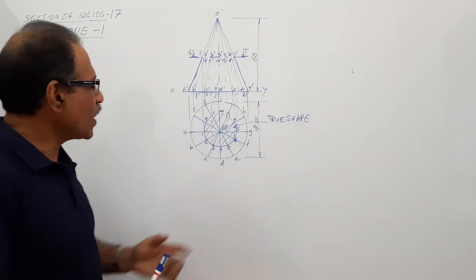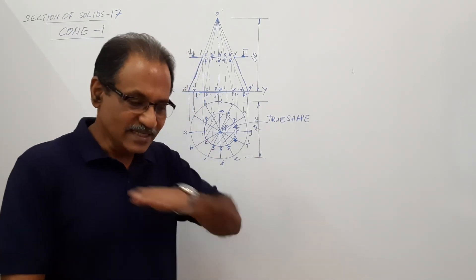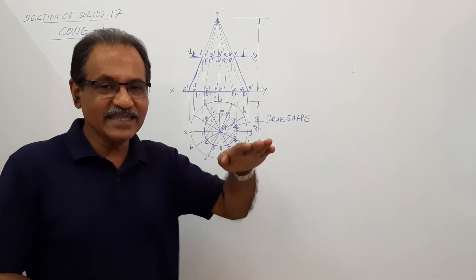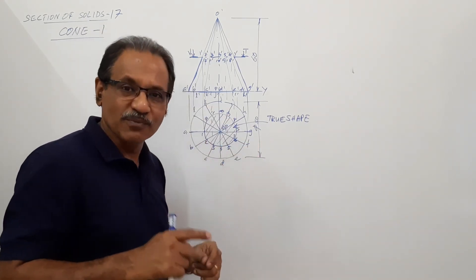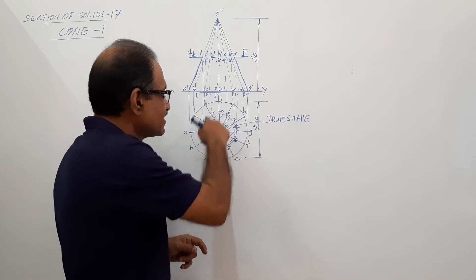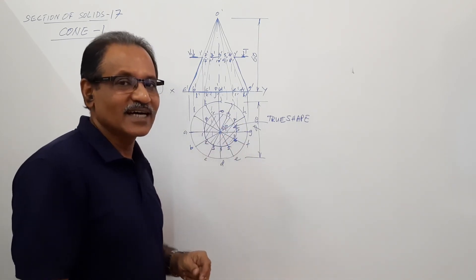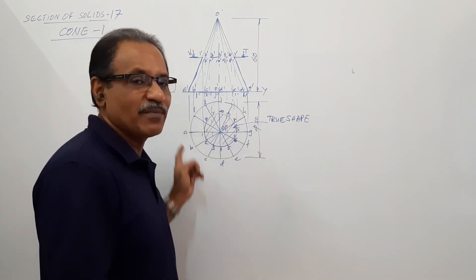Now what is the diameter of the circle? Since the cutting plane bisects the axis, by principle of similar triangles, this circle has got a diameter equal to half the diameter of the base circle.